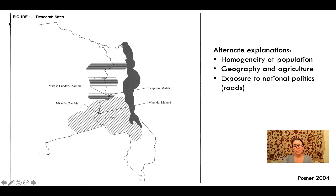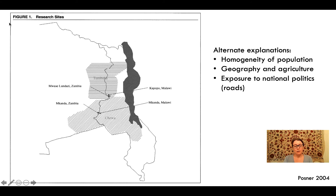Posner goes further in making his case when he selected specific villages in each country to study. He chose them specifically to rule out other potential reasons why they might display different levels of intergroup prejudice and political activity, including exposure to other groups, economic explanations, and their connection to their country's capital.